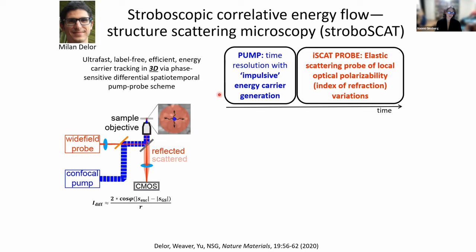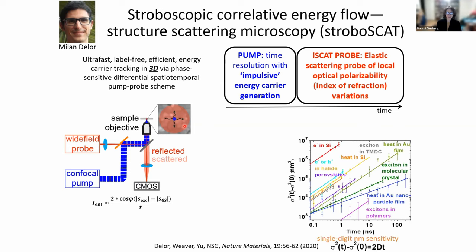We first impulsively create energy carriers in a material in a very small spot, and then we probe in wide field. We're looking at how those energy carriers are modifying the local optical polarizability of the material, and we do this differentially — comparing what we observe with the pump on to what we observe with the pump off. This has allowed us to very rapidly characterize energy transport across a wide range of materials: primarily semiconductors, but also conductors, conventional semiconductors, and unconventional emerging semiconductors. We look at charged carriers, bound electron-hole pairs or excitons, heat, and also sound and ions.